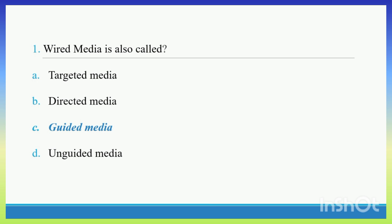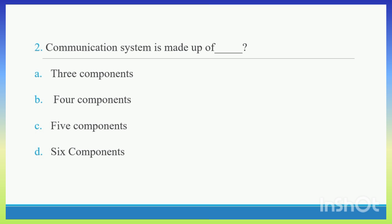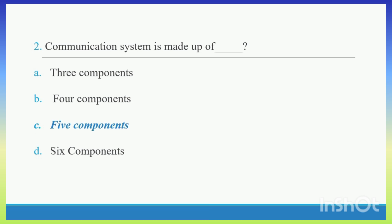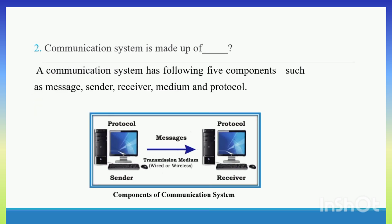Question 2. Communication System is made up of. Option A: Three Components. Option B: Four Components. Option C: Five Components. Option D: Six Components. Communication System is made up of Five Components. Right Answer C: Five Components. A Communication System has the following Five Components.